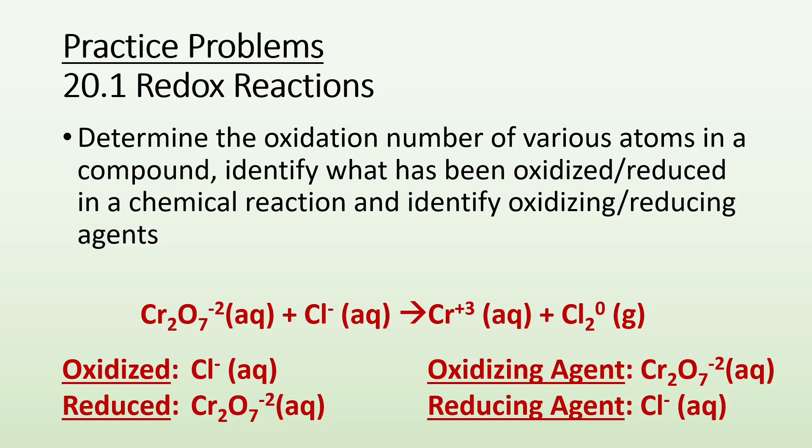How's it going ladies and gentlemen, Mr. Donnie here again. This time we're going to take a look at some practice problems for 20.1 redox reactions where we're going to determine the oxidation number of various atoms in a compound and identify what has been oxidized or reduced in a chemical reaction and also identify oxidizing and reducing agents.